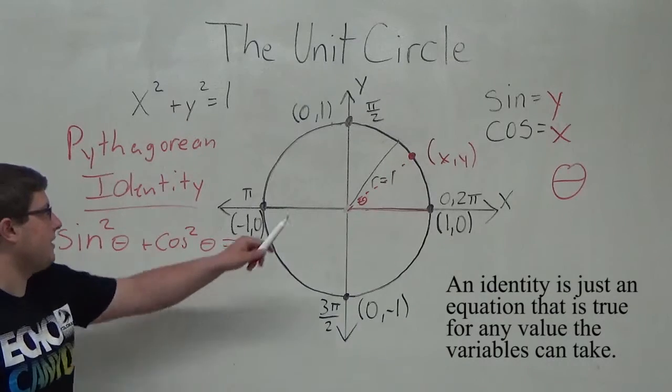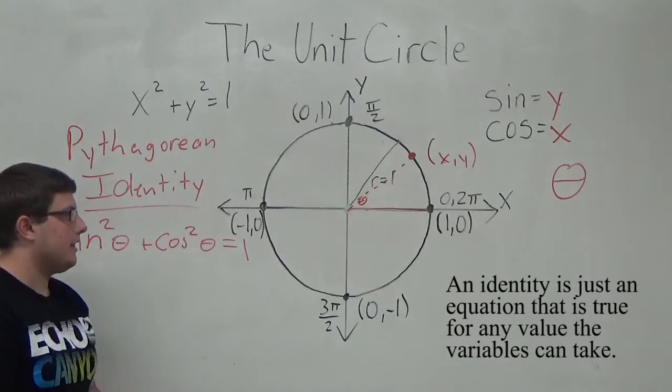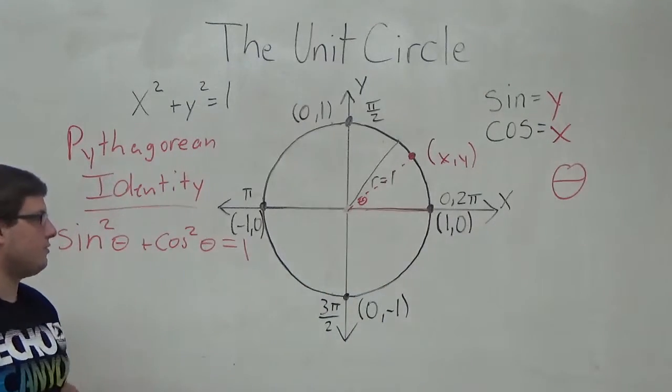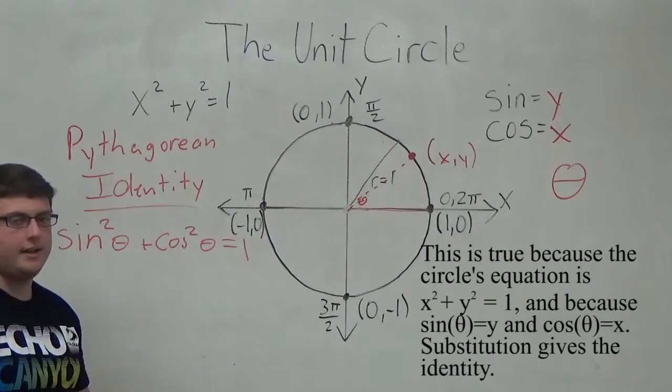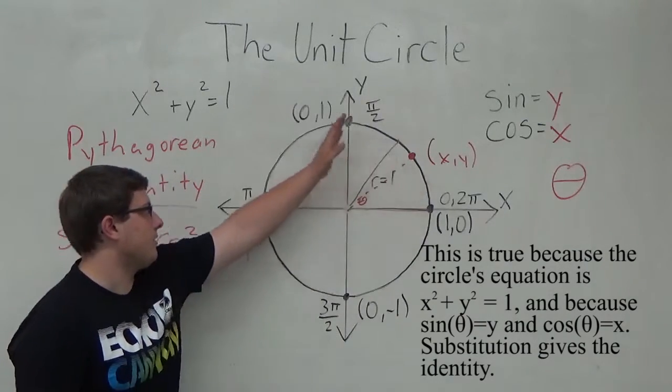You can see this based on all the points marked here along the unit circle. At the point (1, 0), if you add the sine squared of that angle, which would be 0 degrees, plus the cosine squared of that angle, you get 1. That's true for any of these points.